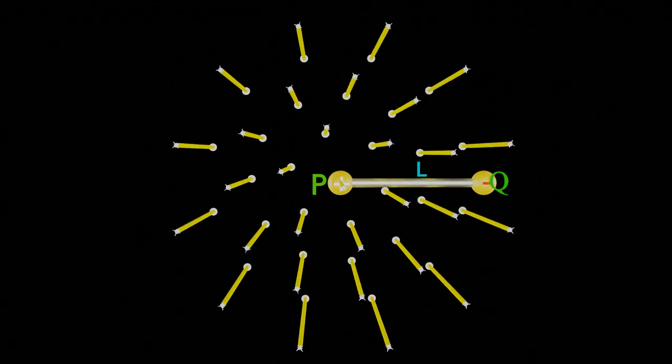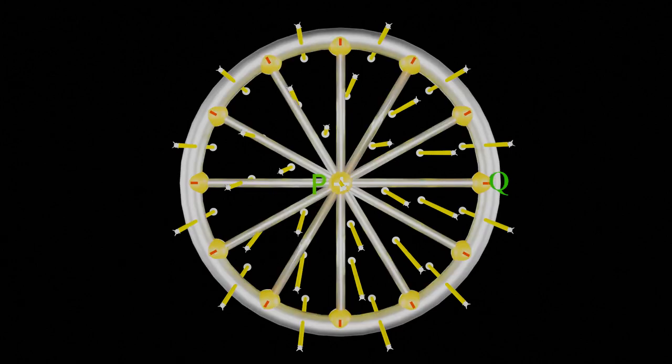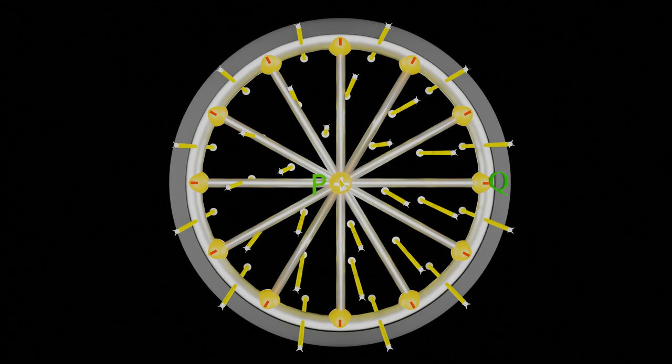At the end, we have a very interesting question for you, that how EMF induced will be affected, if we will increase conducting rods and will make it like a rim of a bicycle. Will it increase, decrease or remain same?